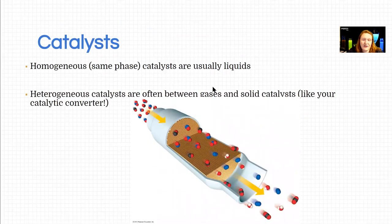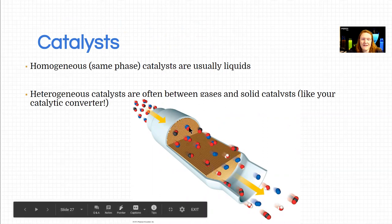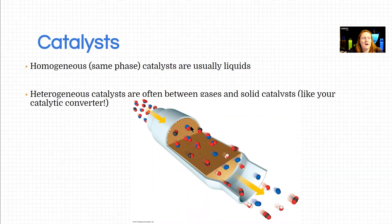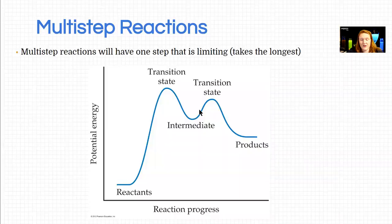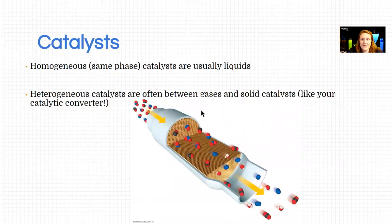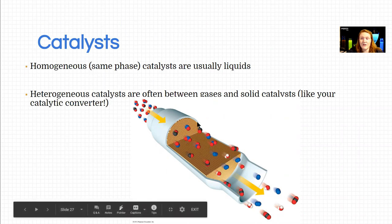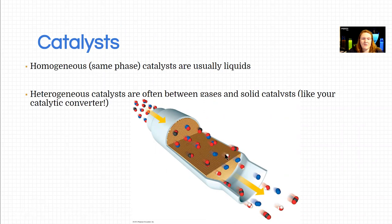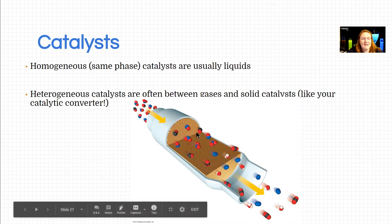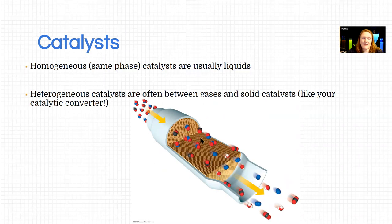This is a catalytic converter in your car cut away. If anyone's ever had to replace one of these guys, they are expensive. You can recycle these things for a fairly large amount of money because they have platinum or palladium catalysts in there and you can regenerate them. These are interesting because in the inside of your catalytic converter, it's a solid and the thing it's converting is a gas. So we call this a heterogeneous catalyst.